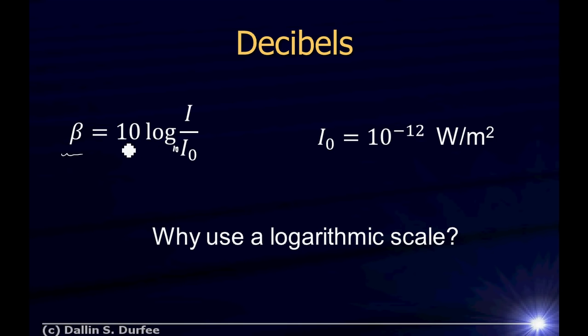Now, why is there a 10 right here? It's because they're decibels instead of bells. I don't know why. Traditionally, we started using the scale that has a factor of 10 in front, and that's just what we stick with. So that's the decibel scale. If I give you the intensity, you can turn that into decibels using this formula. If I give you the sound level in decibels, you can find the intensity by solving this equation right here.